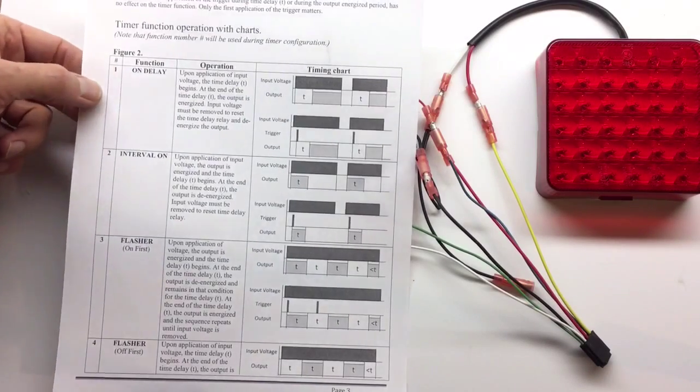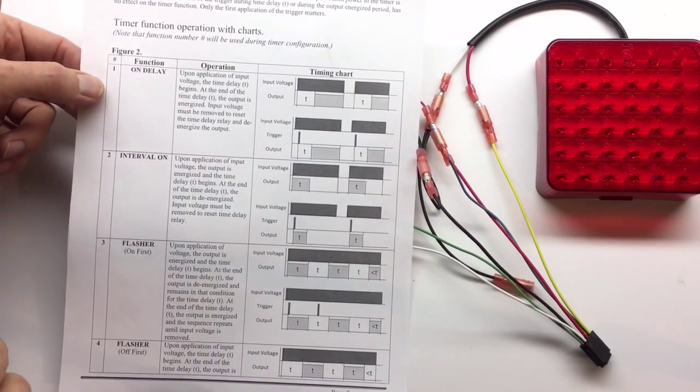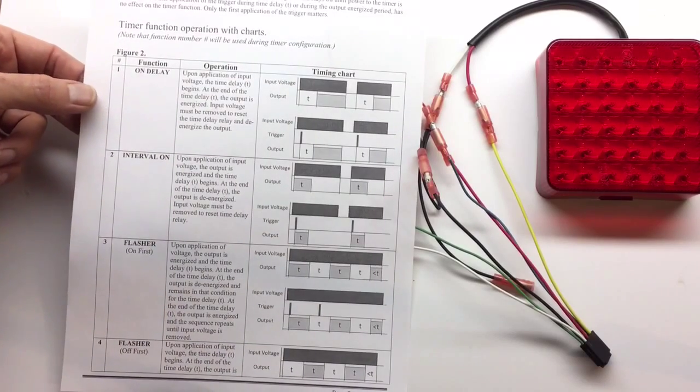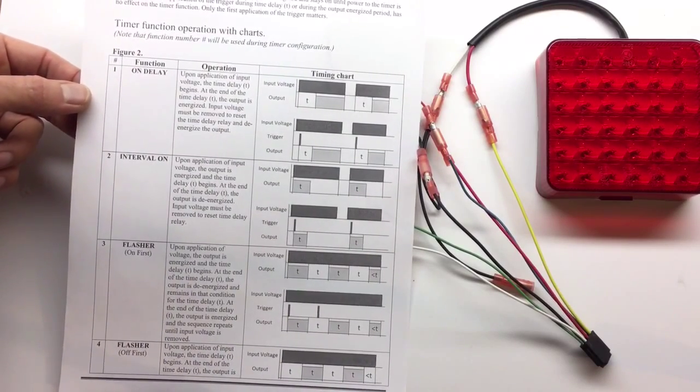We're going to look at function number one, where we delay the power to the output for a period of time t. We supply voltage to the input, and then after the period of time, power is supplied to the output.